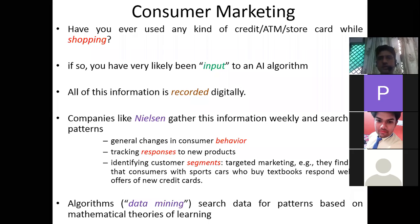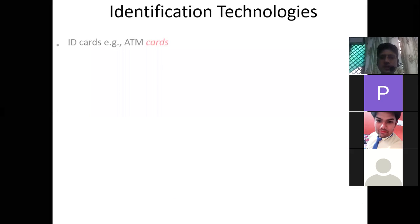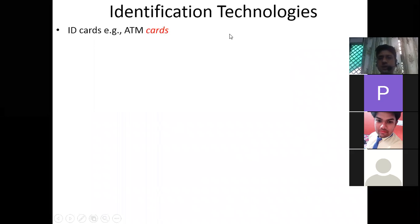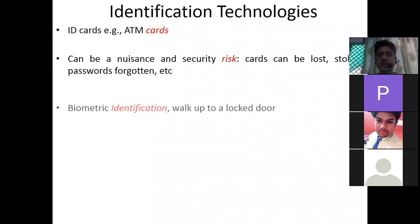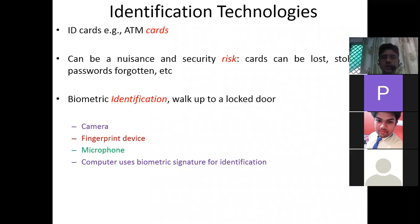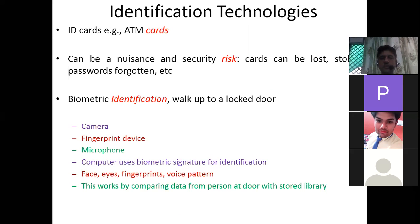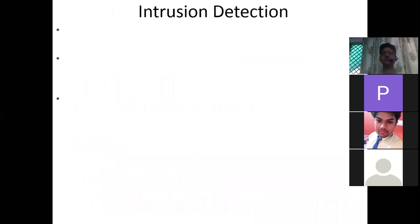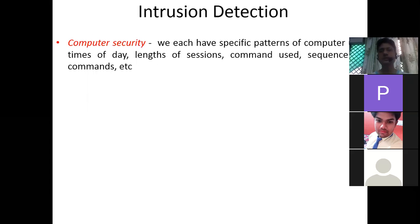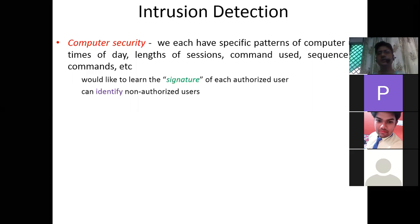That targeted marketing is based on data mining — searching data for patterns using mathematical theories. Identification technologies like ID cards and ATM cards carry risks such as theft or forgotten passwords, so biometric identification using camera, fingerprint devices, microphone, face, eyes, fingerprints, and voice patterns is also used. This works by comparing data from a person with a stored library; learning algorithms can learn the matching process offline and improve performance.